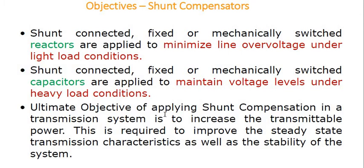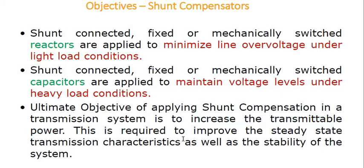The ultimate objective of applying shunt compensation in a transmission system is to increase the transmittable power — that is, to increase the power system's transmission capability. This is required to improve the steady state transmission characteristics as well as the stability of the system.